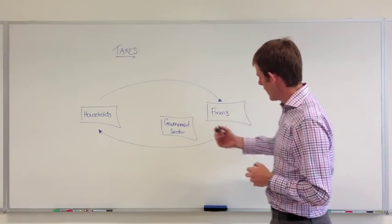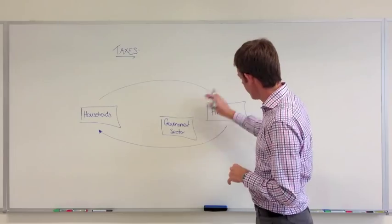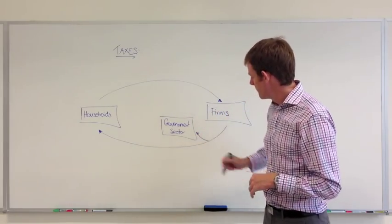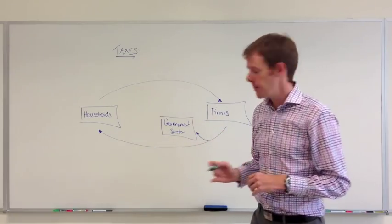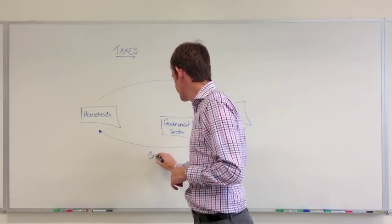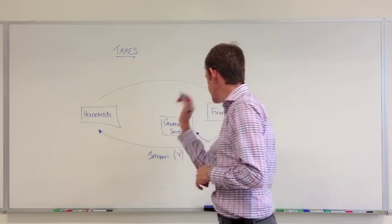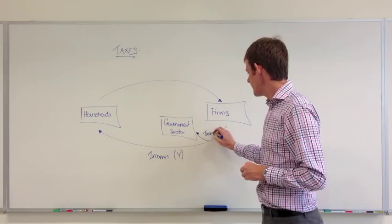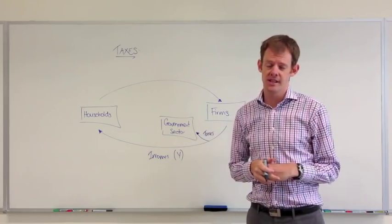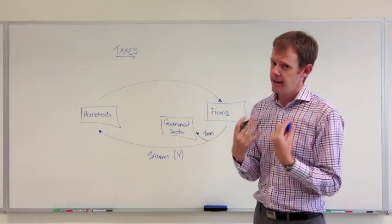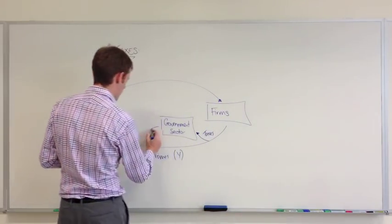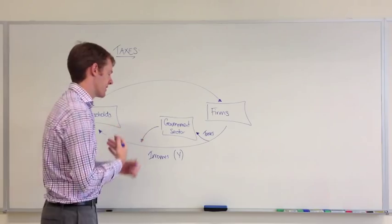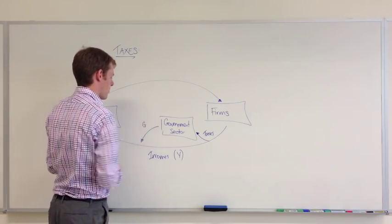Taxes are used, and they're an example of what's called a withdrawal. The money is captured from here. The flow down the bottom, remember, is called income. And taxes is one example of money that comes out from the circuit flow into the government sector. Later, government spending or transfer payments comes back out of the sector.